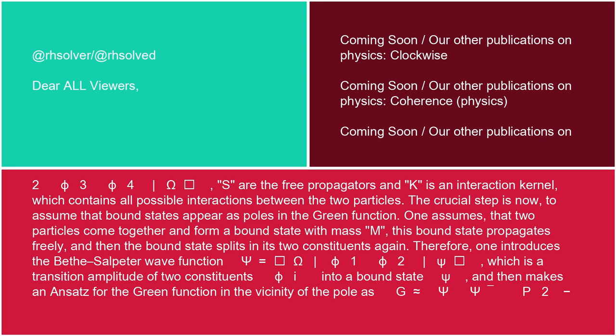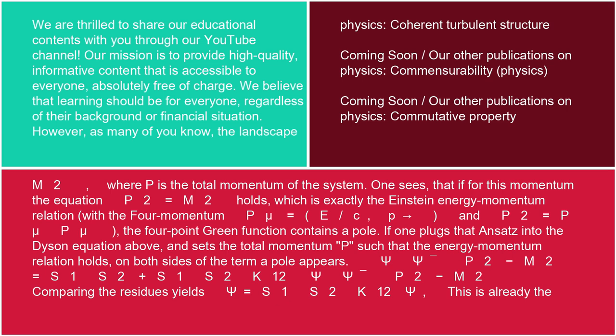The crucial step is now to assume that bound states appear as poles in the Green's function. One assumes that two particles come together and form a bound state with mass M. This bound state propagates freely, and then the bound state splits into its two constituents again. Therefore, one introduces the Bethe-Salpeter wave function ψ equals ⟨Ω|φ₁φ₂|ψ⟩, which is a transition amplitude of two constituents φ into a bound state ψ, and then makes an ansatz for the Green's function in the vicinity of the pole as G ≈ ψψ̄ / (P² minus M²), where P is the total momentum of the system.